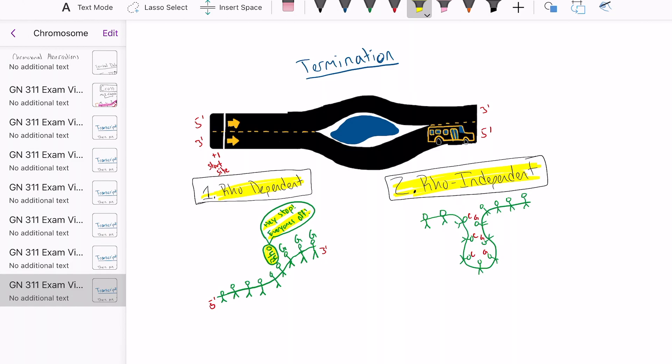The second scenario is rho-independent, where the RNA chain hits a point where it is rich in C and G nucleotides, which stick together and cause the RNA polymerase to stop. This is called a stable hairpin. So this little loop here is a stable hairpin.